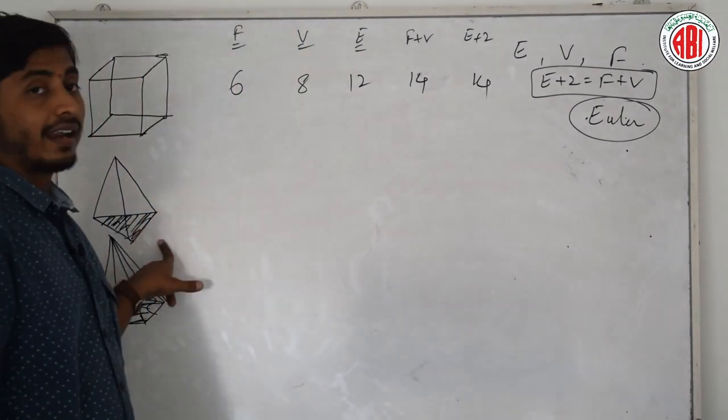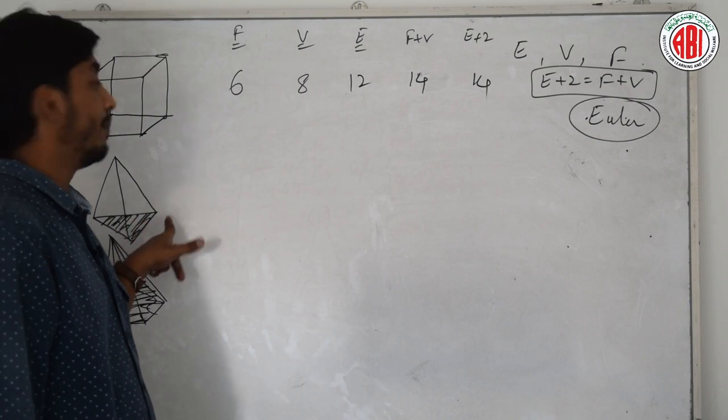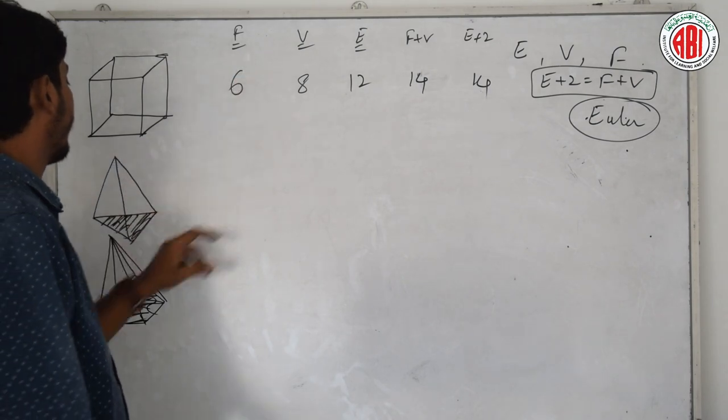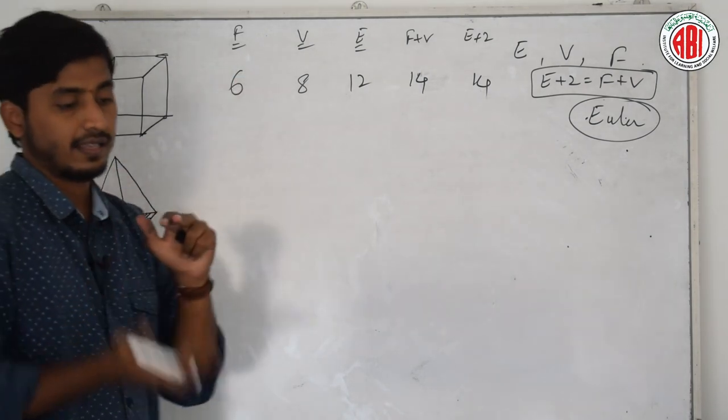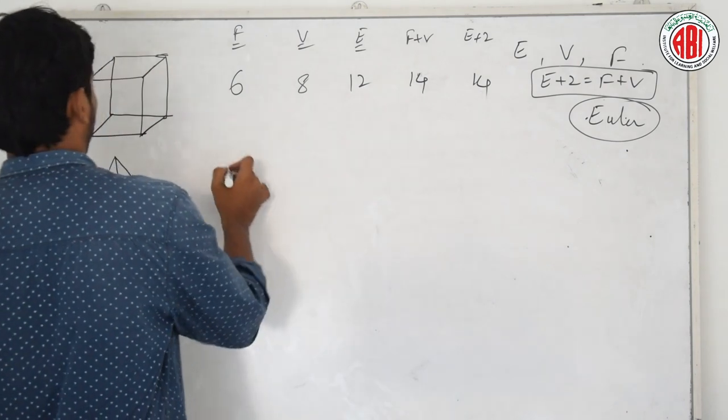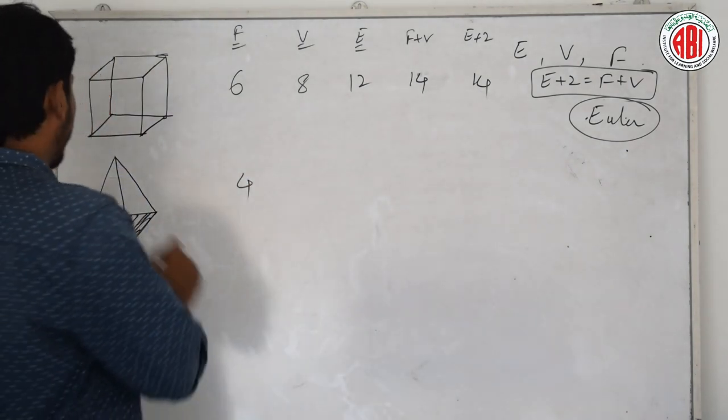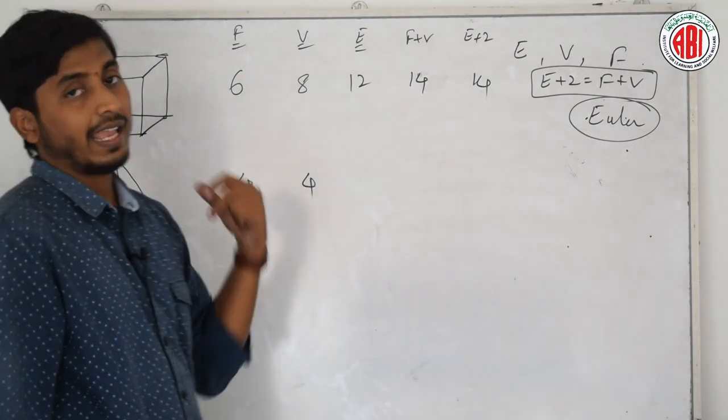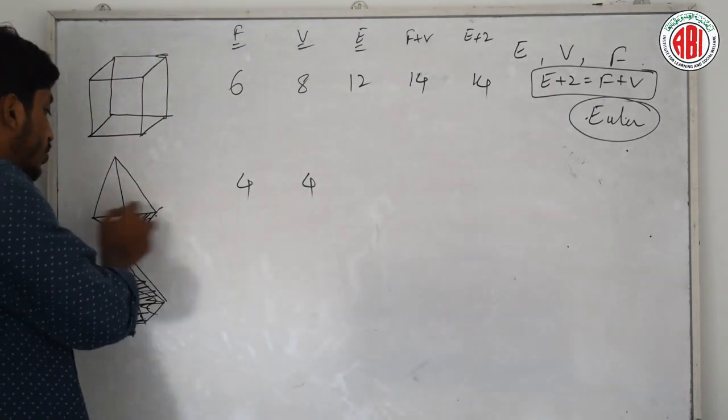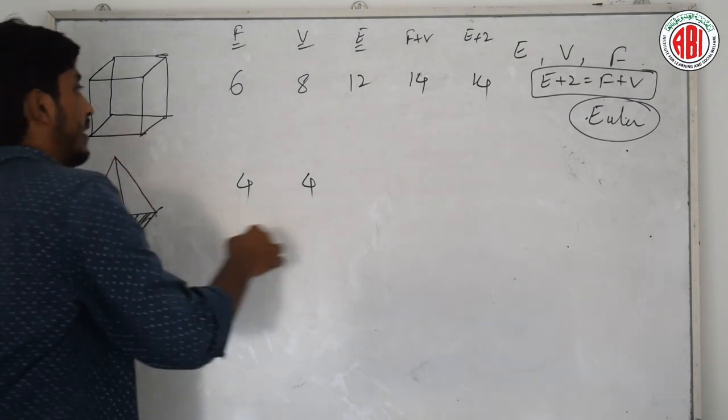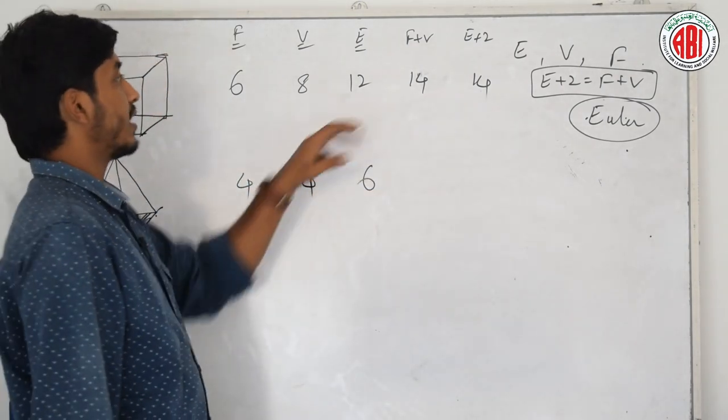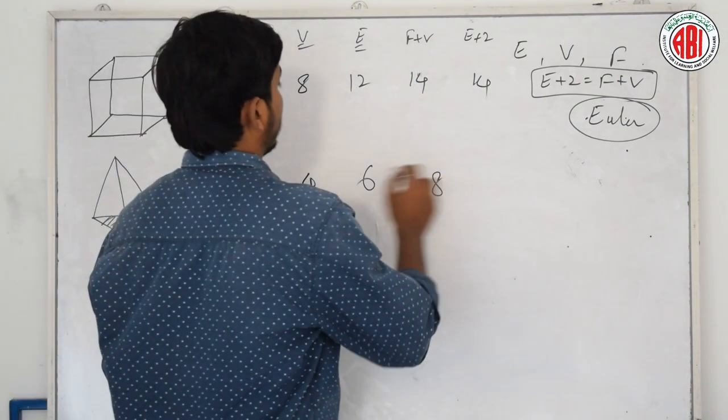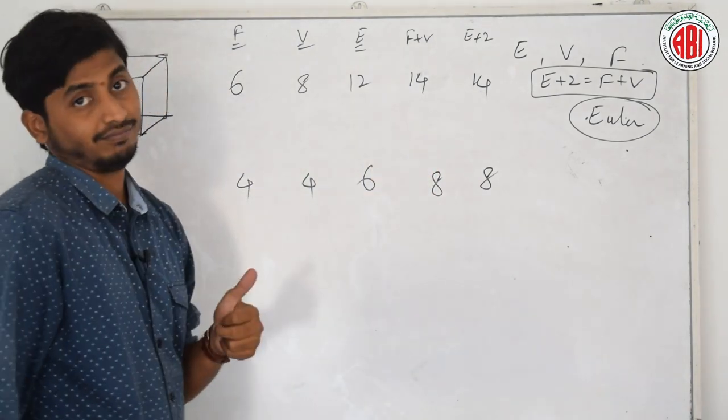See here. This is triangular pyramid. Base is triangle. How many faces? 1, 2, 3, 3 faces with a base face, that is 4. How many vertices? 1, 2, 3 and 4. How many edges? 1, 2, 3, 4, 5, 6. Now add F plus V, 4 plus 4, 8. 6 plus 2, 8. Both are same.